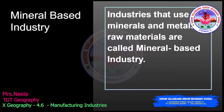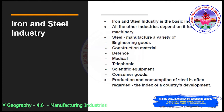Industries that use minerals and metals as raw materials are called mineral-based industries. Basic or key industries are those which supply their products as raw material to manufacture other goods. Steel is used in the manufacture of a variety of engineering goods, construction materials, defense, medical, telephonic, and scientific equipment, and consumer goods. So naturally, the production and consumption of steel is often regarded as the index of a country's development.